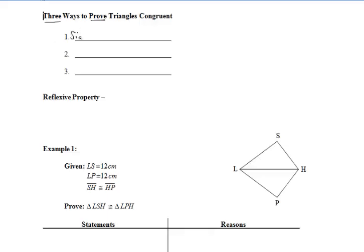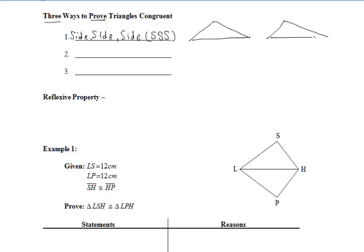The first method is Side-Side-Side. Instead of writing it out in your proofs, you can just write SSS. What this says is, if we have two triangles and all three pairs of corresponding sides are congruent — three distinct pairs of corresponding sides congruent — then the triangles must be congruent.